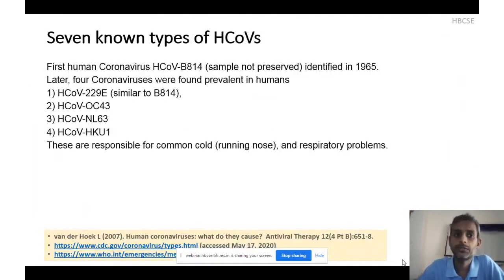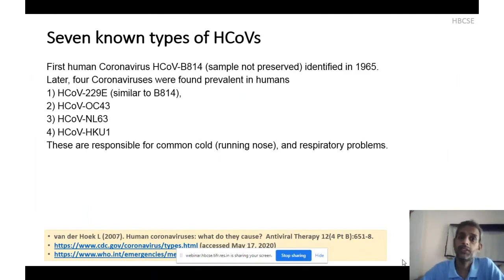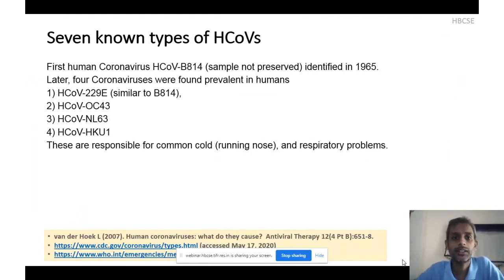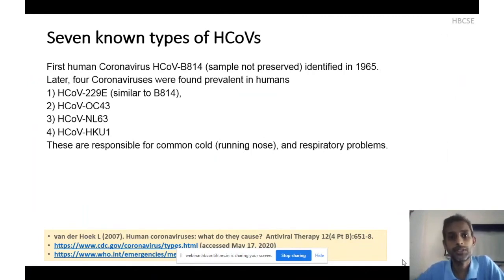As you may have heard in many articles and forums, coronaviruses are not new to humans. The first human coronavirus was identified in 1965 when a young boy was infected and the viral sample was isolated from his body. This coronavirus was titled HCoV-B814. HCoV stands for human coronavirus, and B814 was the code assigned to it, but the sample could not be preserved. Later, many coronaviruses were found prevalent in humans.